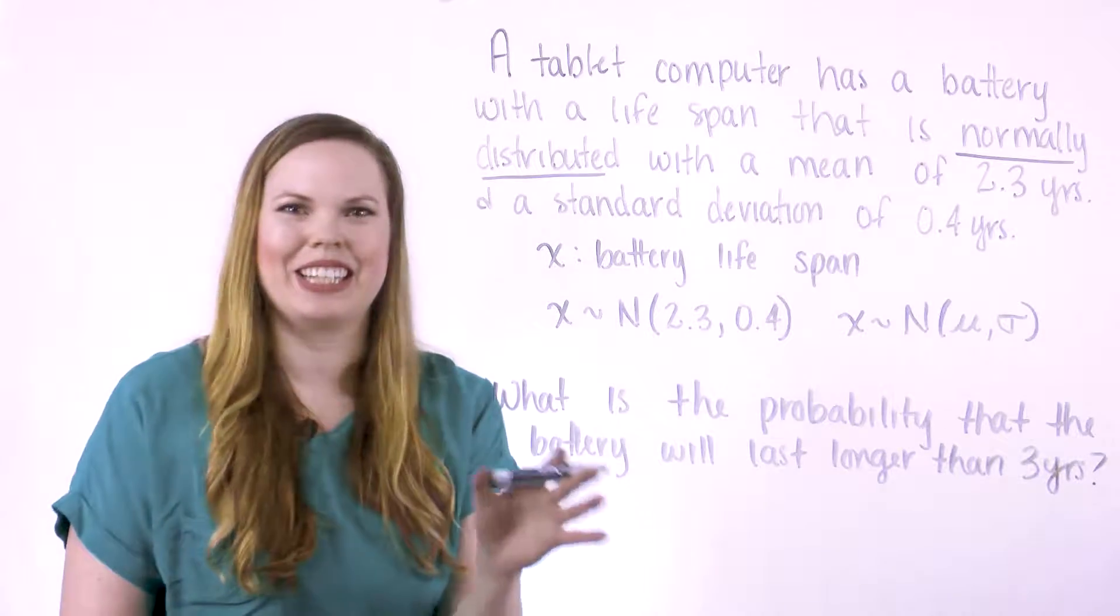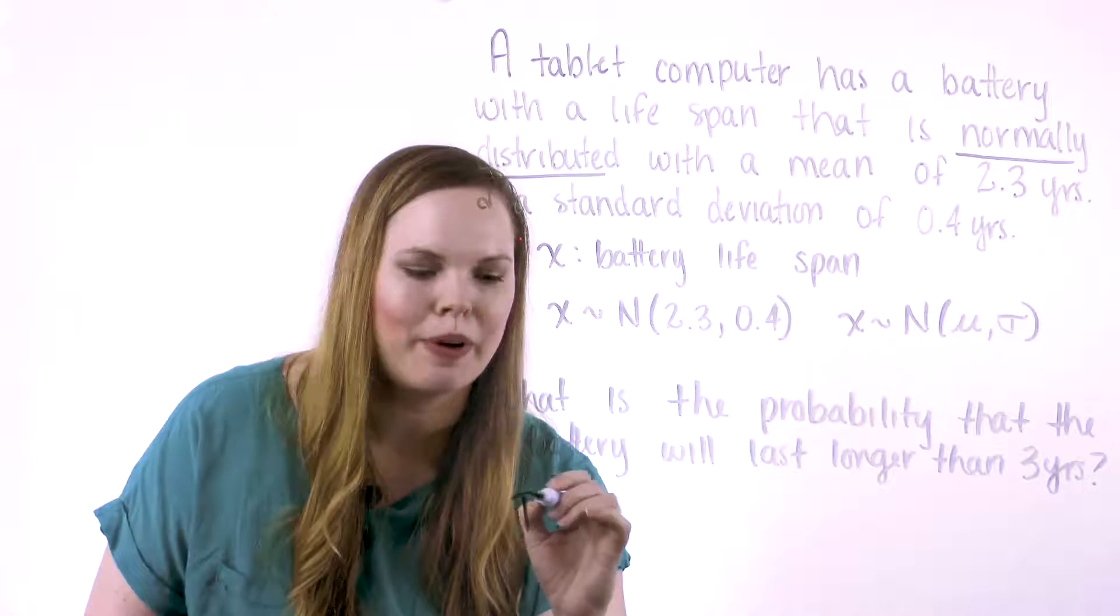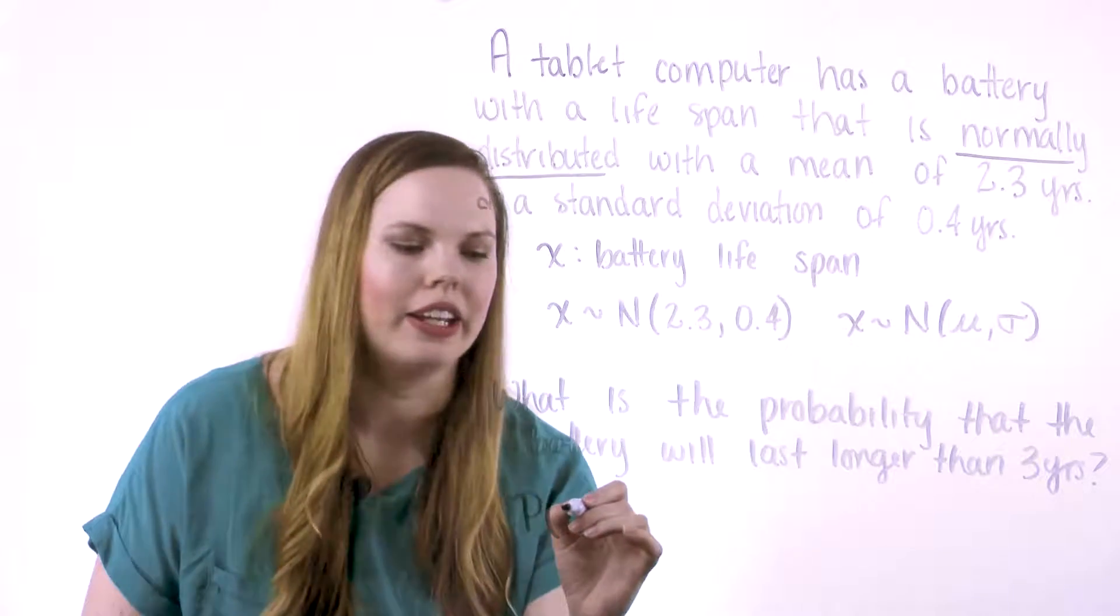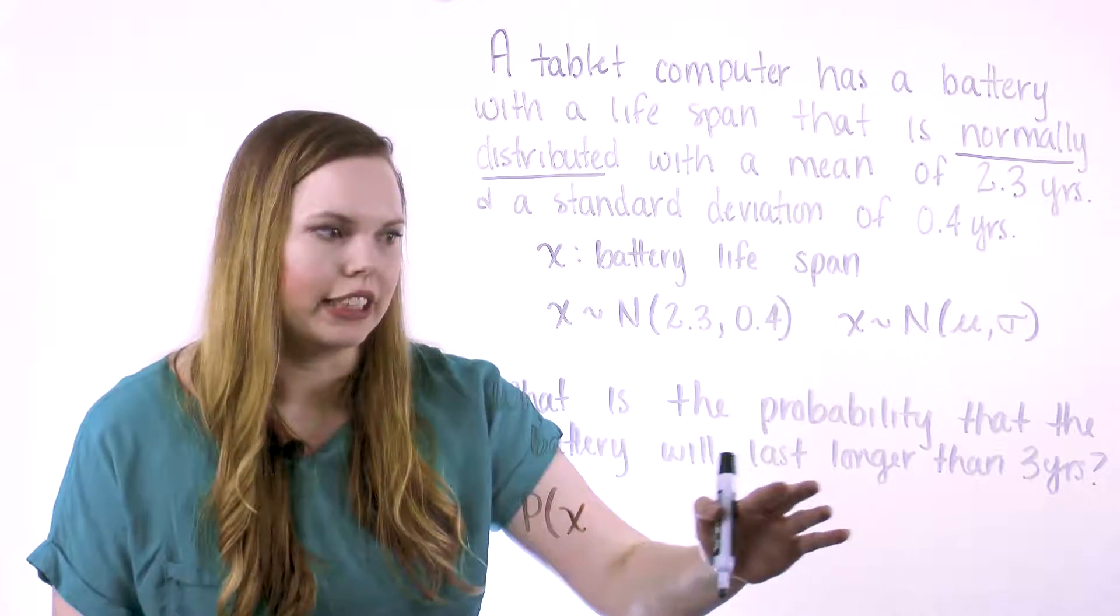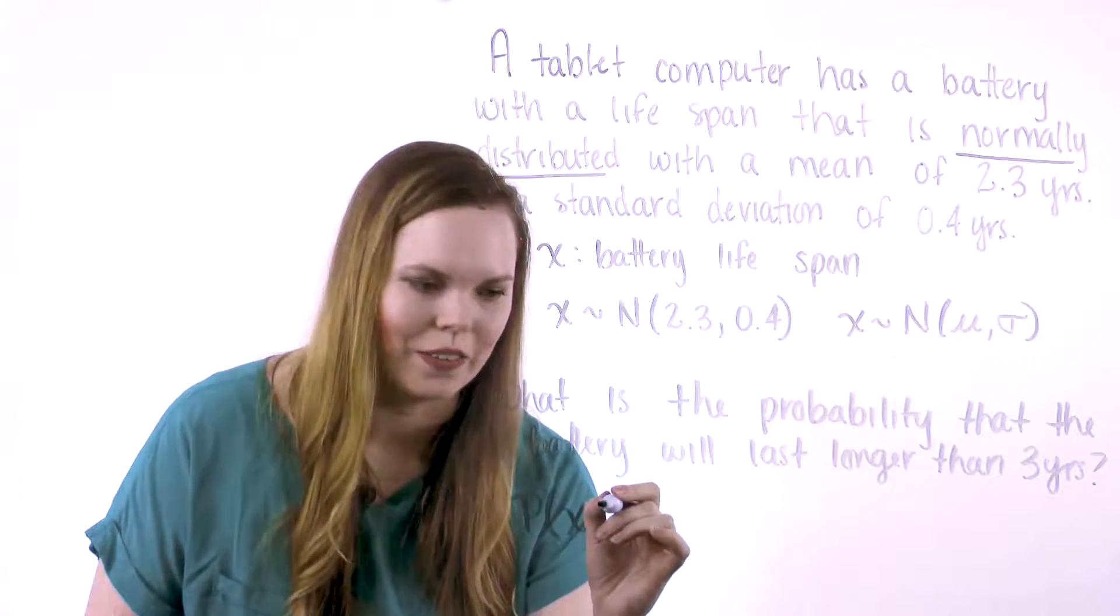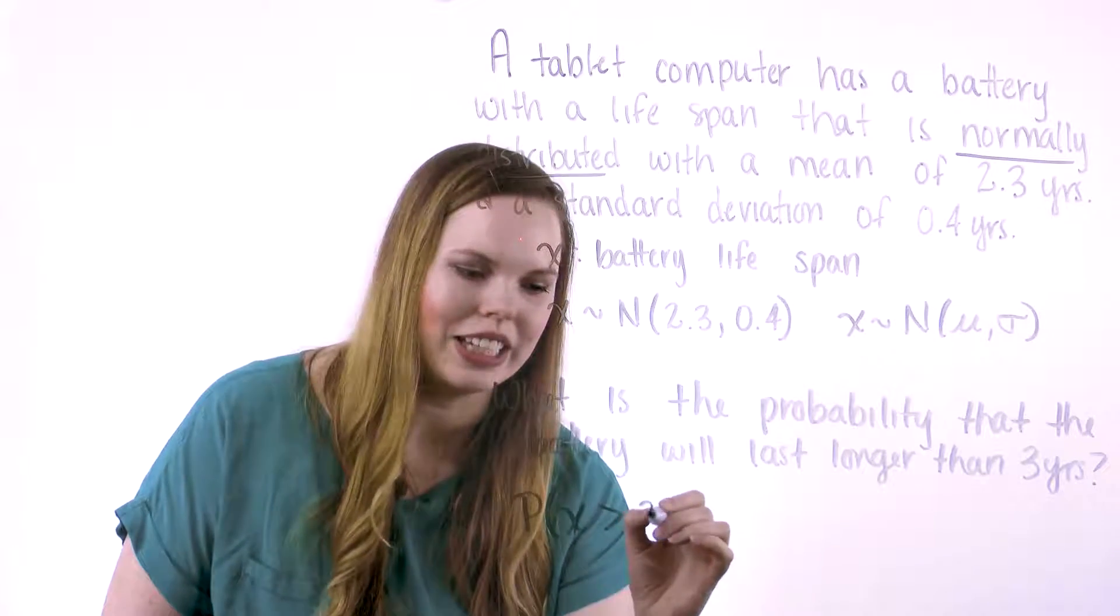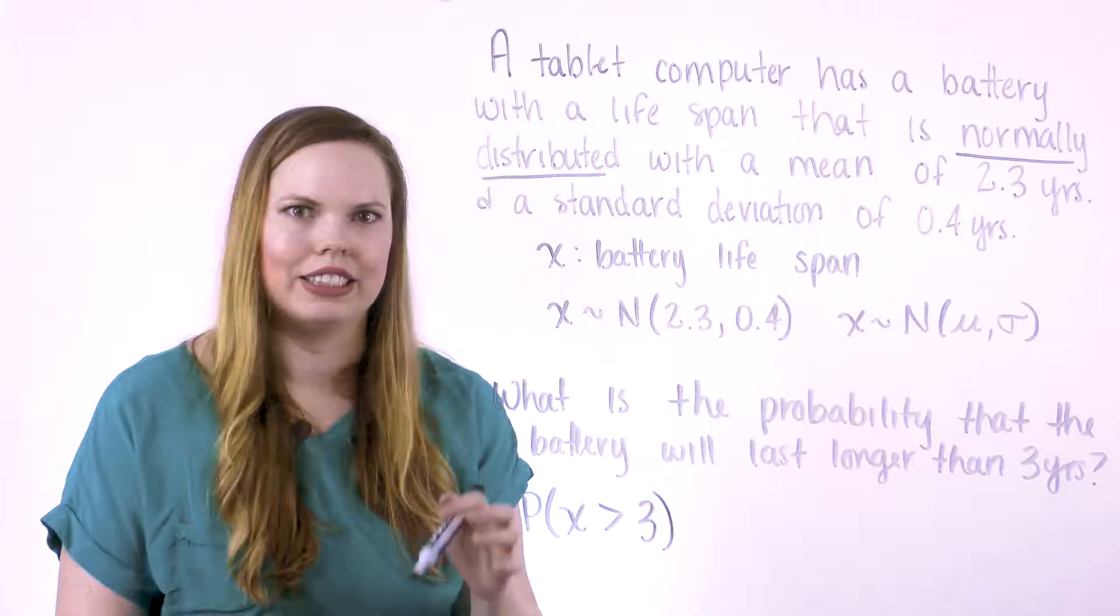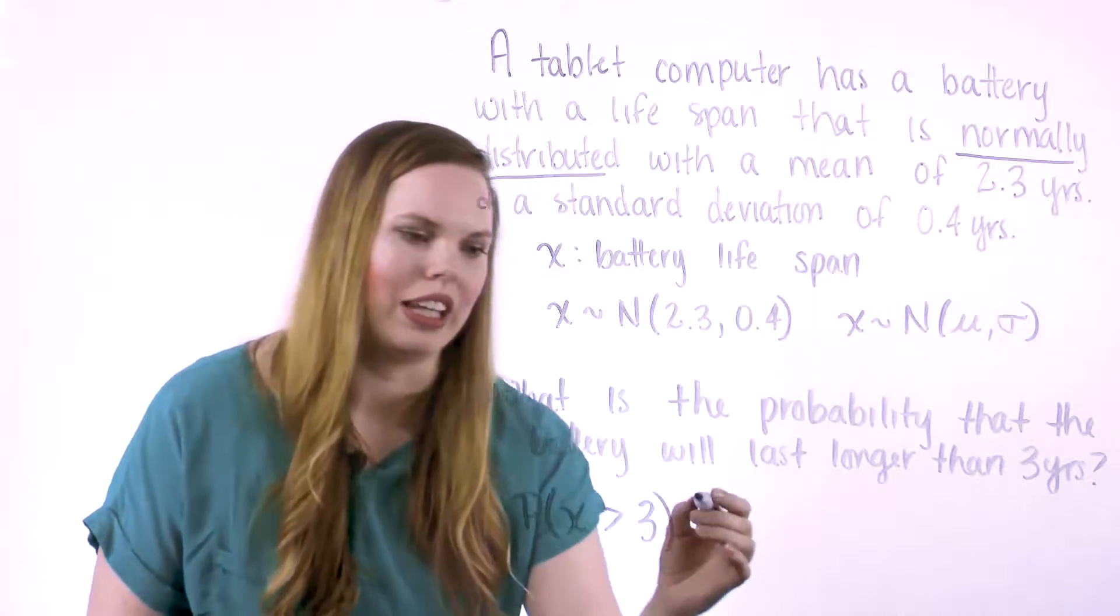So all those words sometimes can get a little scary, but really all this is asking is, what is the probability that my x variable, my battery lifespan, that my battery lifespan will last longer? So that's greater, more than, so that's greater, will be greater than 3 years. So all I'm asking here is, what is the probability that this randomly selected variable x is going to be greater than 3?